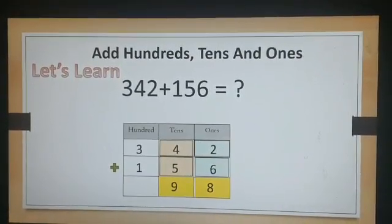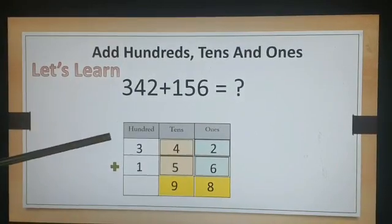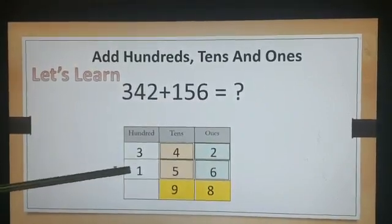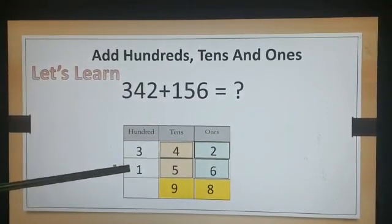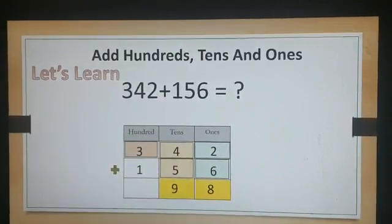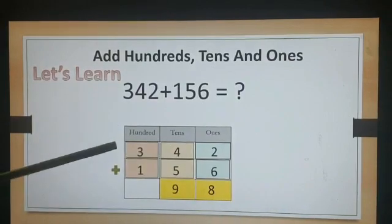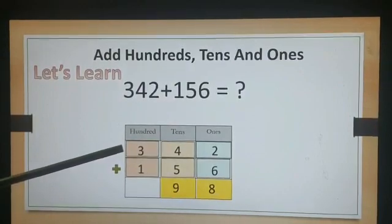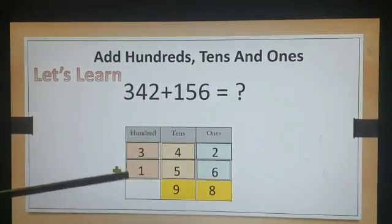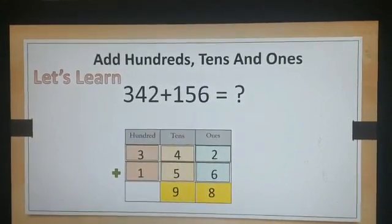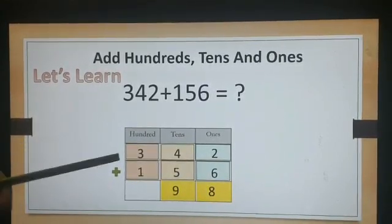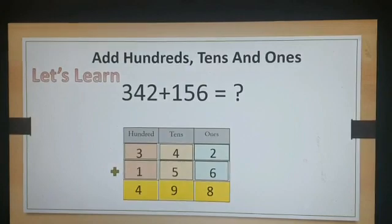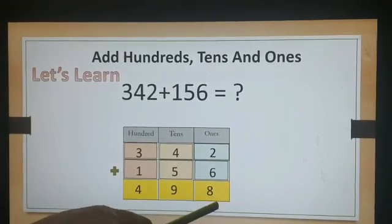Now step 3: Add the hundreds. Yes, you are right, 3 plus 1. Tell me which number is bigger. Yes, you are right, 3. Keep it in your mind, 1 is on your finger. 3, 4. Yes, 3 plus 1 is 4. You got it. So the answer is 498.